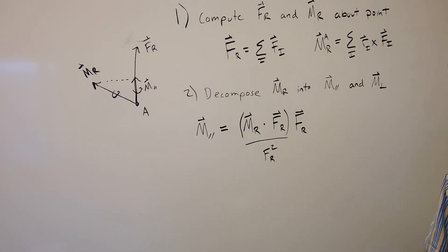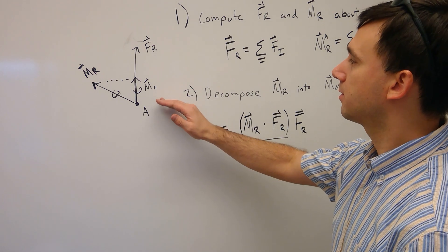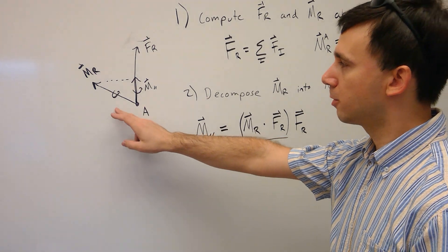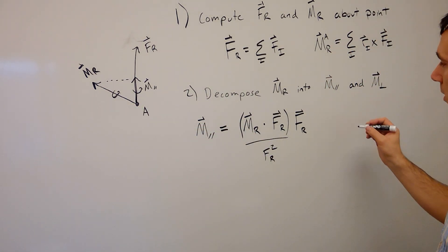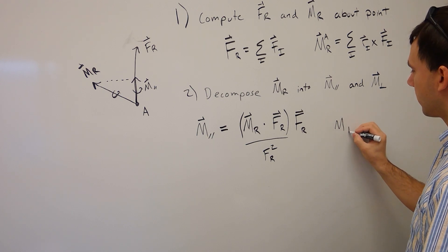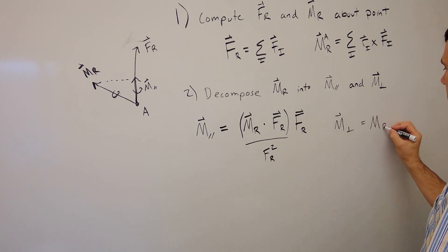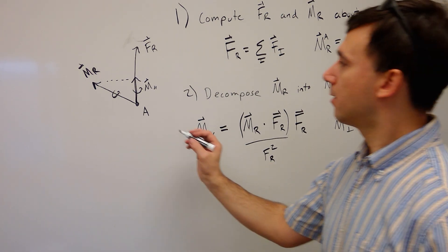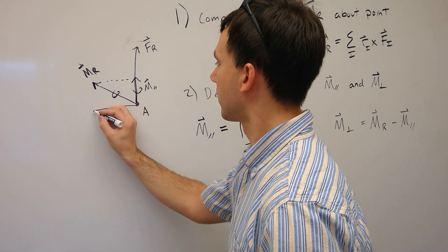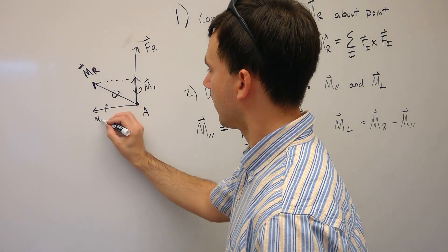The second part is to get the perpendicular component. We want the vector sum of the parallel component plus the perpendicular component to equal the total resultant moment. So to get M_perpendicular, we just subtract: M_perpendicular = MR minus M_parallel.